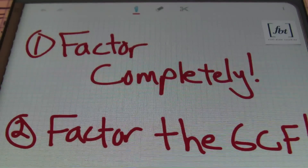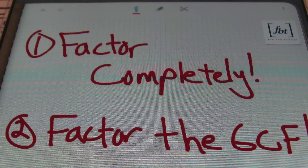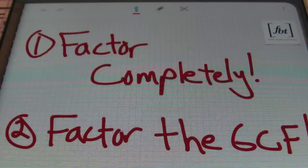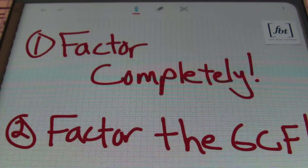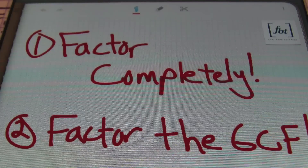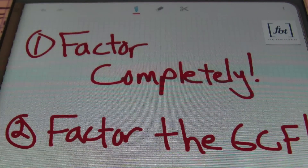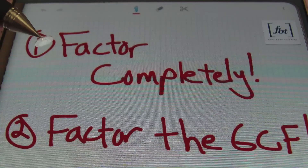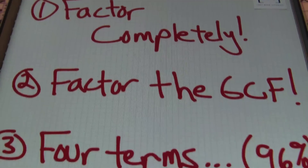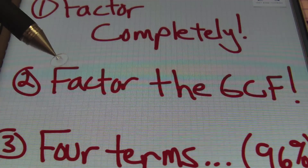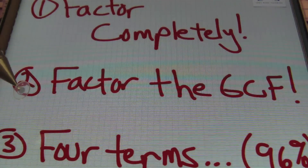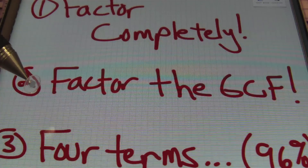First of all, anytime you're factoring a polynomial, ladies and gentlemen, you always want to factor completely. When I say factor completely, that means that sometimes the directions will just say 'factor.' However, there are times where you'll be able to continue to factor — in other words, factor multiple times in one problem. So always read directions that say 'factor' as 'factor completely,' every single time.